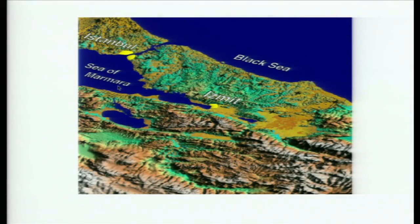What you're looking at is the site of the 1999 Ismet earthquake, a magnitude 7.6 event on the North Anatolian Fault. I'm going to show you the same kind of fishnet stocking illustration to show you how we calculate the Coulomb failure stress.